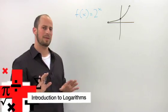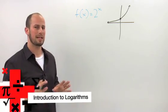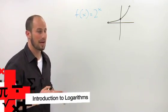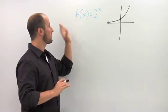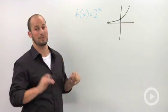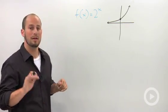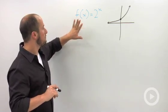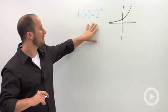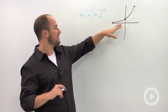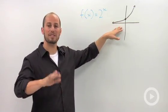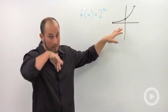So for this episode, what I want to do is take a look at the graph of f of x is equal to 2x. I have my exponential function and I have a rough sketch of the graph.